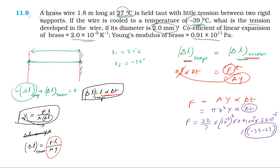Calculating: 22 by 7 times 10 to the power minus 6 times 0.91 times 10 to the power 11 times 2 times 10 to the power minus 5 times delta T. This gives the tension force developed in the wire as 3.8 times 10 to the power 2 Newtons.